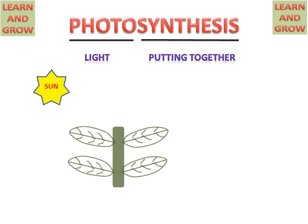We have a plant which has leaves. When the sun gives radiation to these leaves, a photosynthesis reaction will happen.